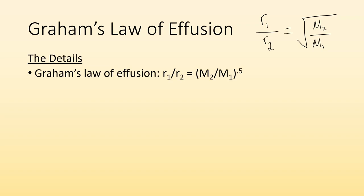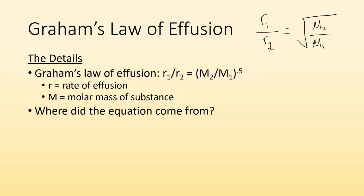All right mathematically the details. Graham's law of effusion is the rate of effusion for particle 1 divided by the rate of effusion for particle 2 is equal to the square root of the molar mass of particle 2 divided by the molar mass of particle 1. All right so r is the rate of effusion. Big M is the molar mass of the substance. Where did this equation come from? All right well for those of you who are interested here it is. If you're not interested then just know that this is the equation that you're going to want to use.